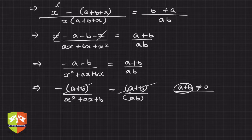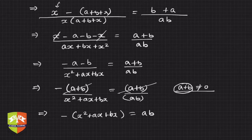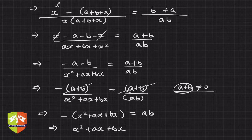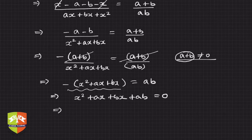After cancelling (a + b), the next step gives minus of (x² + ax + bx) equals ab. Taking the reciprocal and rearranging, the entire equation reduces to x² + ax + bx + ab = 0, by bringing all terms to one side.